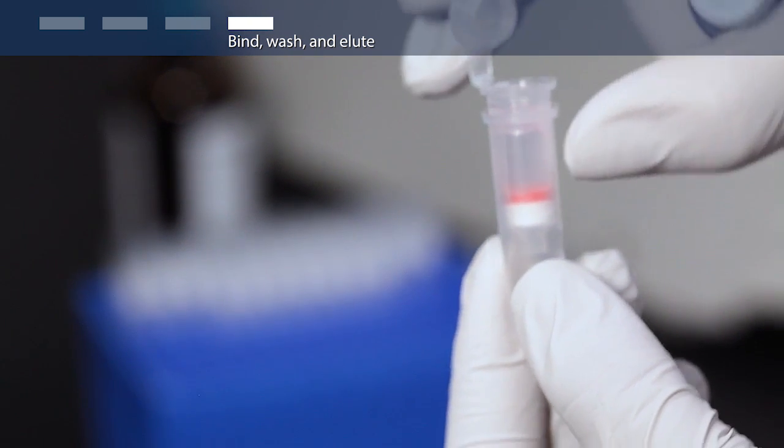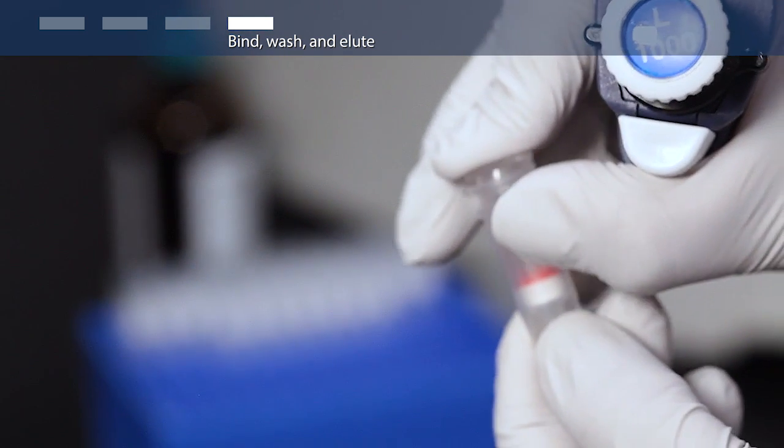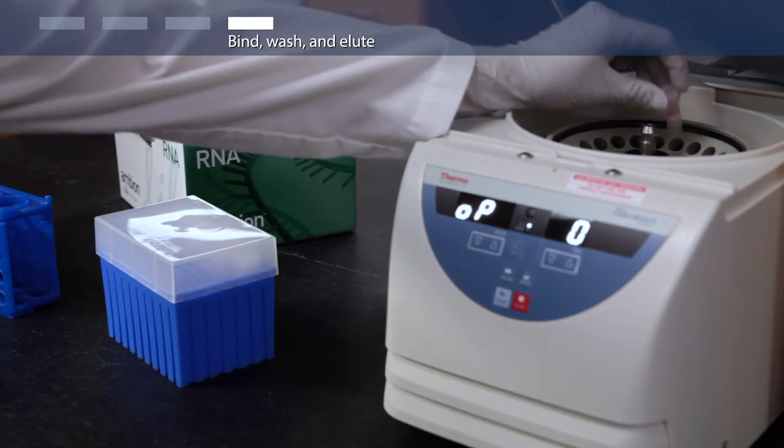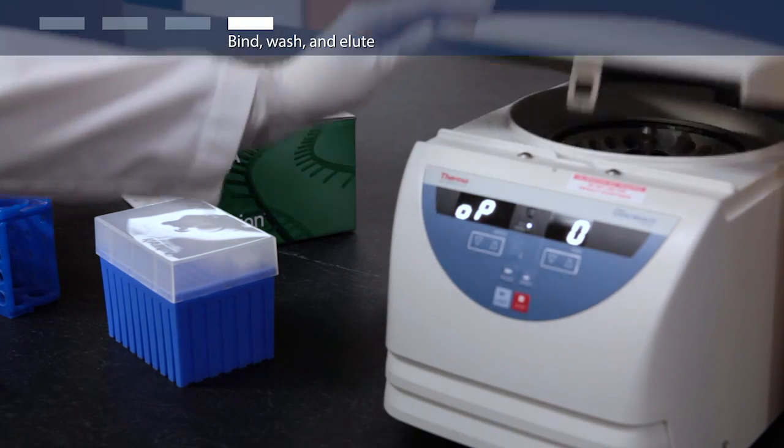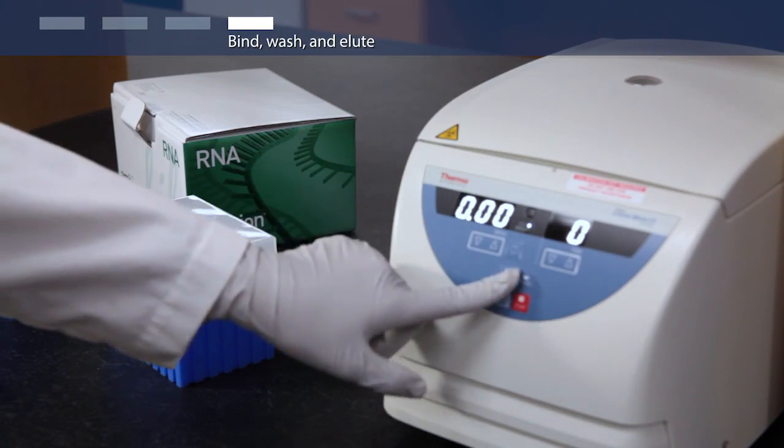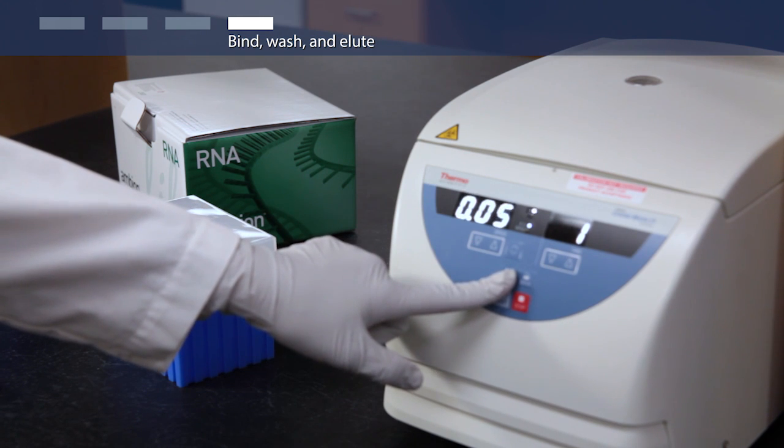Transfer 700 microliters of the sample to a column which has been inserted into a 2 ml collection tube. Centrifuge at 12,000 g for 15 seconds. Discard the flow-through.